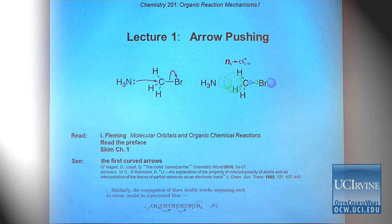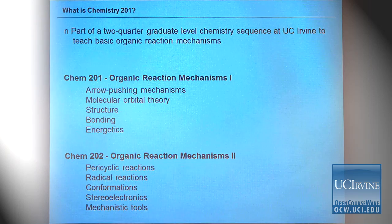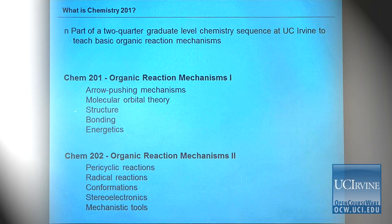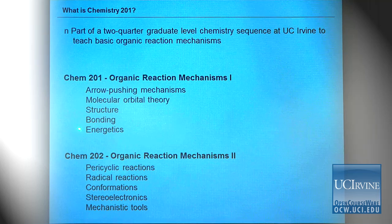Chemistry 201 is part of a two-quarter graduate-level chemistry sequence at UC Irvine to teach basic organic reaction mechanisms. About 15 years ago, we realized that students were finishing their first quarter of graduate-level organic chemistry knowing a lot of things, but not being really good at arrow pushing mechanisms. We decided to correct that by reorganizing the course content. In the first quarter, we cover arrow pushing mechanisms, molecular orbital theory, structure, bonding, and energetics.